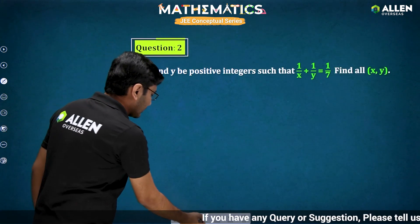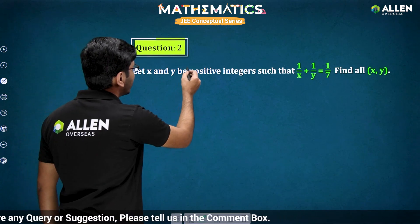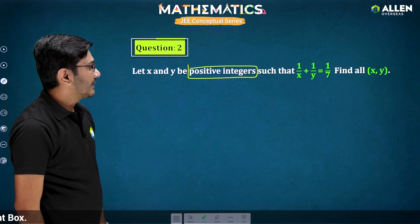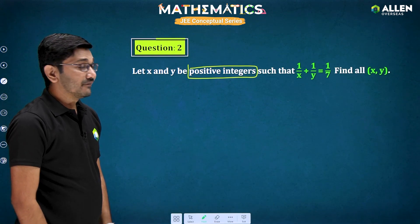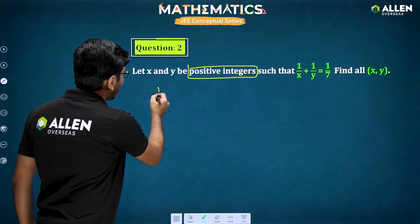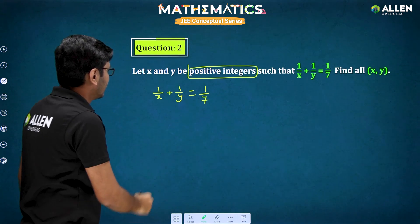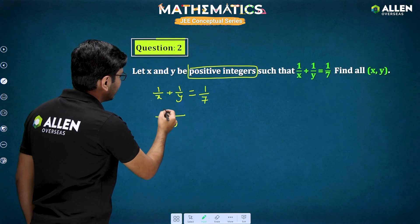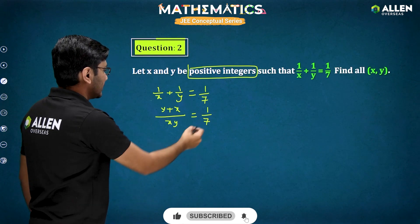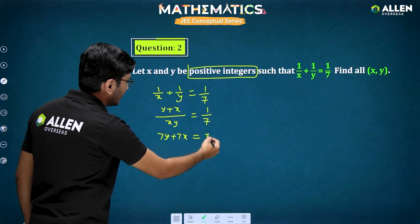Now let's see another question. Here x and y are positive integers such that 1/x plus 1/y equals 1/7, and we want to find all positive integral solutions. Taking the LCM as xy, I get (y plus x) over xy equals 1/7. Cross-multiplying gives 7y plus 7x equals xy.